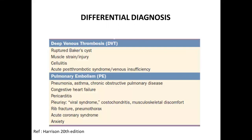For differential diagnosis: if a patient presents with unilateral leg swelling and pain, you should also consider ruptured Baker's cyst, muscle strain or injury, cellulitis, acute post-thrombotic syndrome, or venous insufficiency. For pulmonary embolism, the differential diagnosis includes pneumonia, asthma, COPD exacerbation, myocardial infarction, congestive heart failure, pericarditis, rib fracture due to trauma, pneumothorax, and anxiety-related shortness of breath.